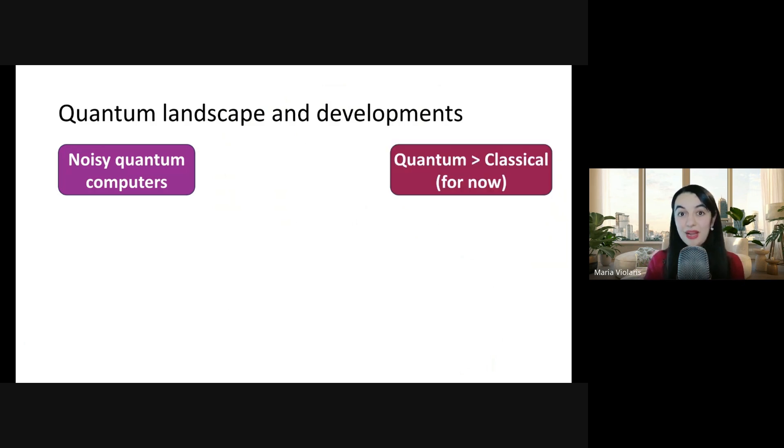We have reached a point where quantum systems are able to solve some problems much faster than a classical computer, but not useful problems. And they're ones that are tailored for being something that quantum computers are particularly good at. This is what people often call quantum supremacy.